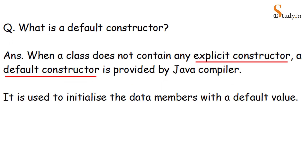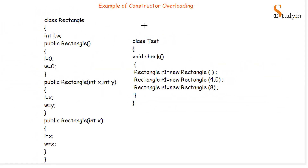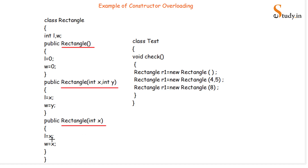Here is an example of constructor overloading. We have a non-parameterized constructor which initializes values to defaults. Then we have a parameterized constructor receiving two int parameters x and y, setting l equal to x and w equal to y. And we have another parameterized constructor receiving one int parameter x, where both l and w are initialized to x. So we have three different constructors — one non-parameterized and two parameterized — but with different signatures.